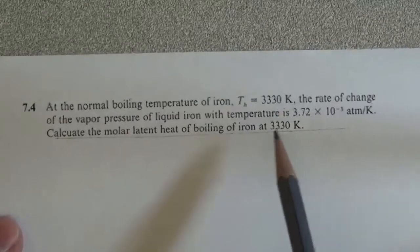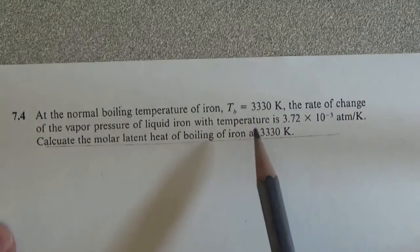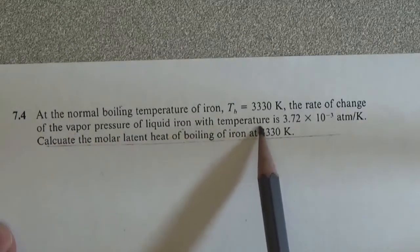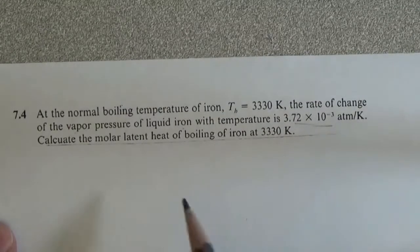At the normal boiling temperature of iron, which is 3330 K, the rate of change of vapor pressure of liquid iron with temperature is 3.72 times 10 to the minus 3 atm per K.